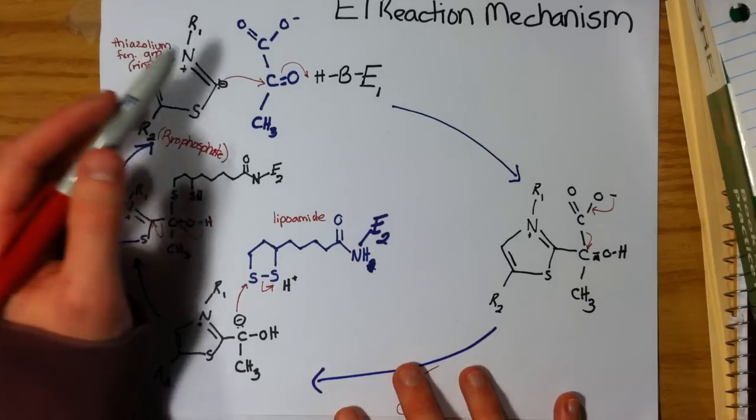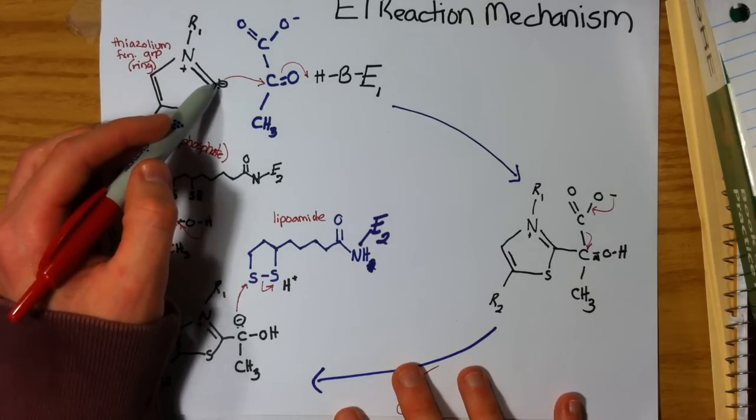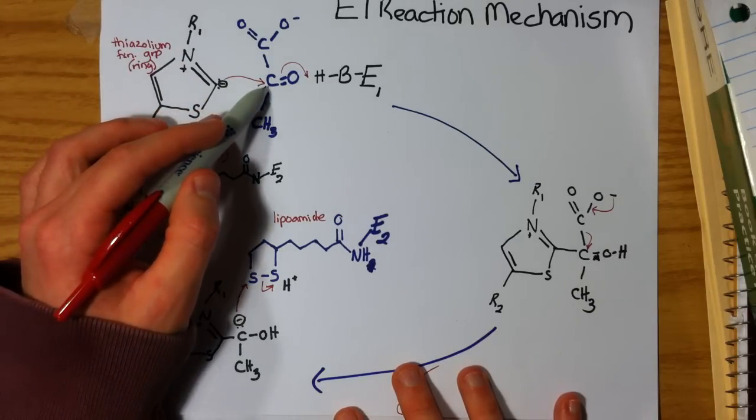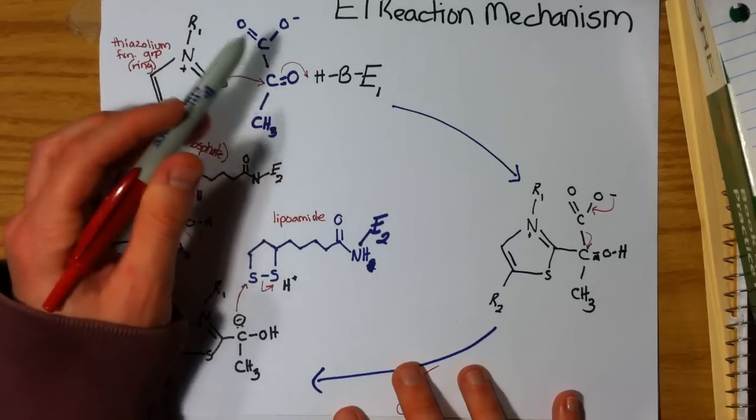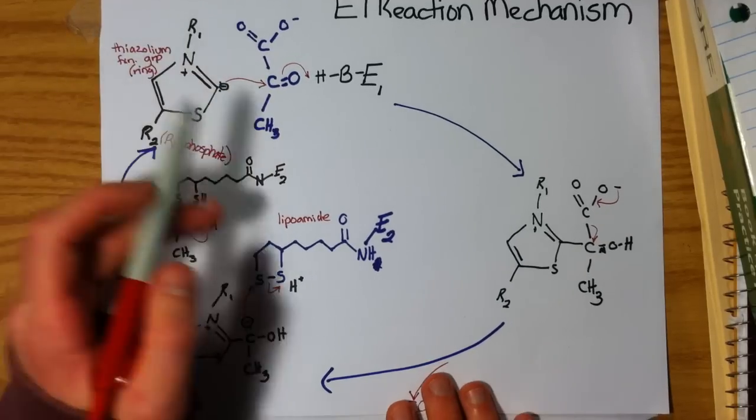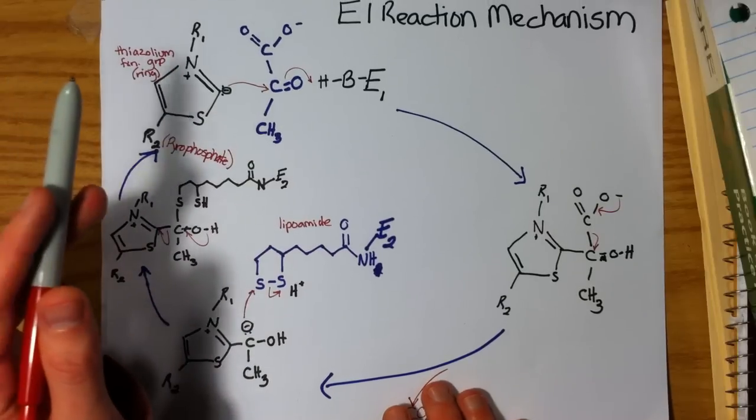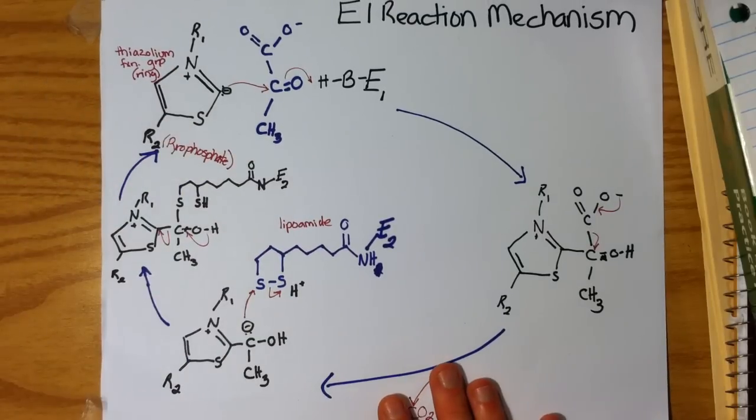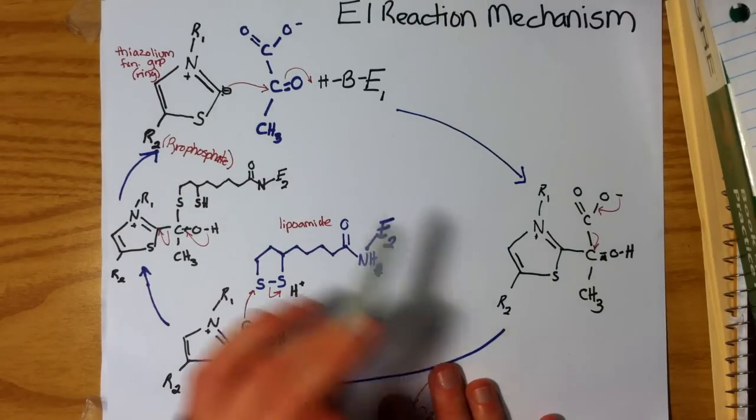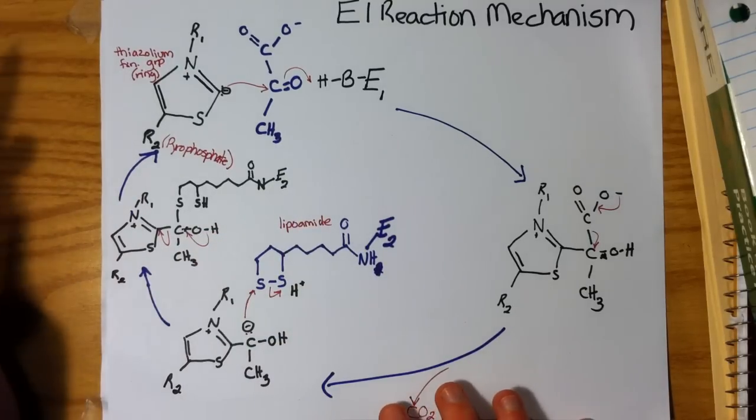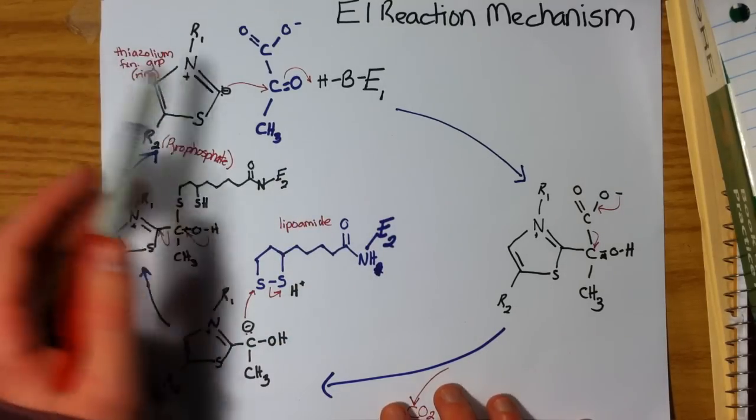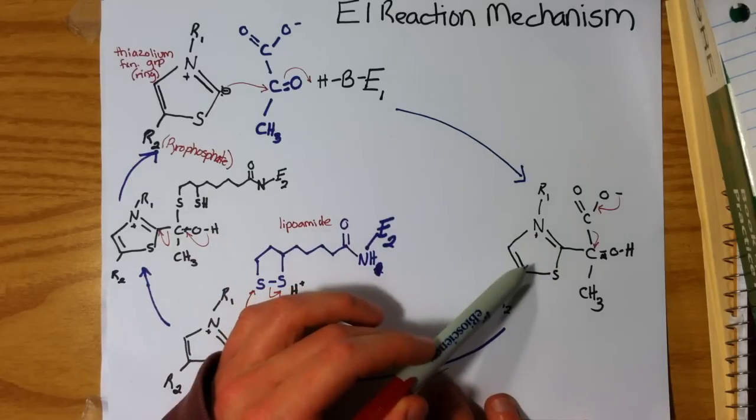So what happens is we have the carbanion, which attacks the electrophilic carbonyl group, pushes electrons up on the oxygen, which picks off a hydrogen from some general base. Actually, it turns out this base is attached to the E1 complex as well as the thiazolium ring.